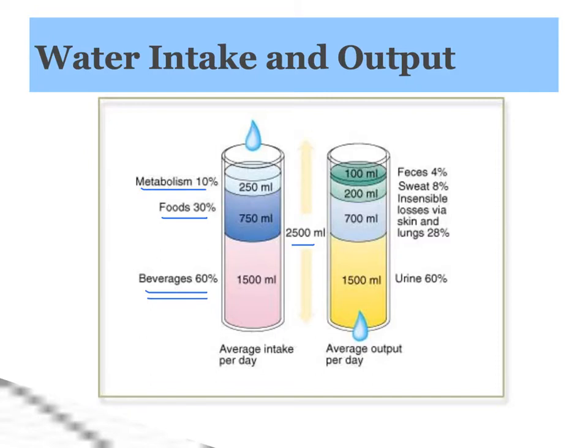How does the water go out? There are some ways that we can't really measure easily. Water is lost through feces, through sweat, and as we exhale, there's moisture in the air coming from our lungs. If someone needs to measure your water loss, they'll be measuring your urine, because that is something we can measure, and as you notice from this chart, it is the bulk of where the water output is coming from.